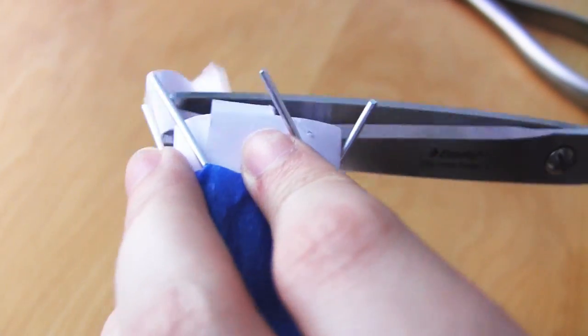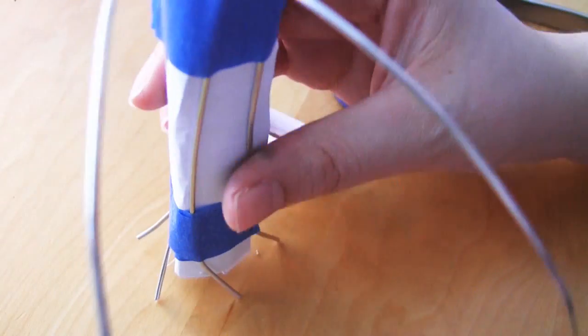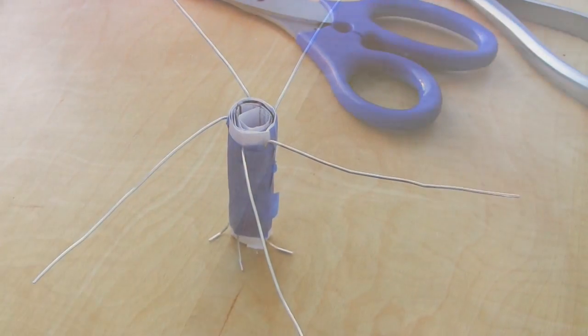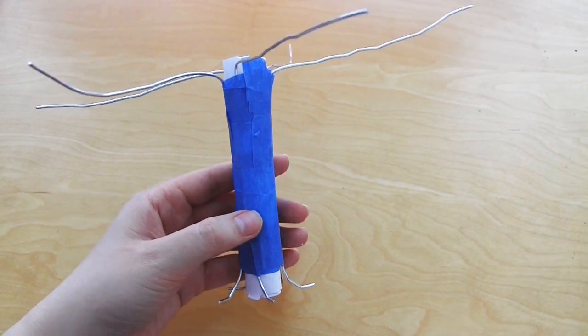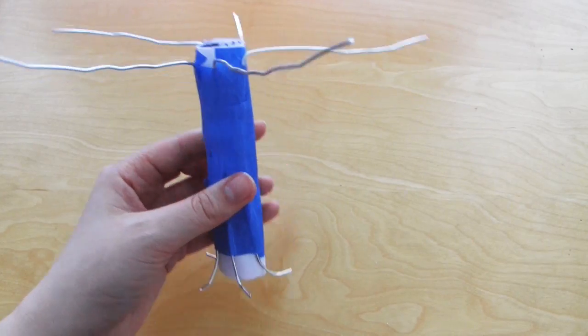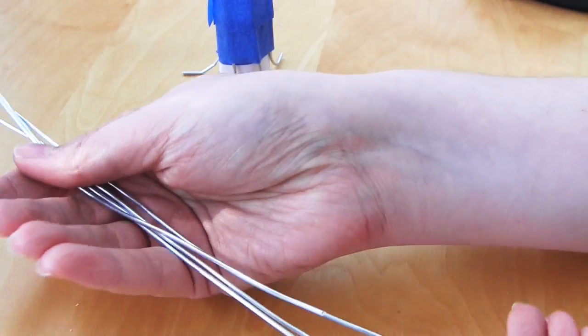Then you can move on to making the inner branches of the tree. The more inner branches you have the more full your tree will look. So it depends on your preference and what you want your tree to look like. With the main frame I used five pieces, which I would say is the minimum you should use.